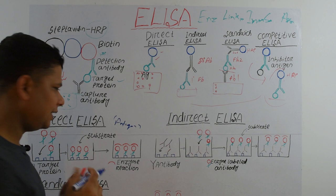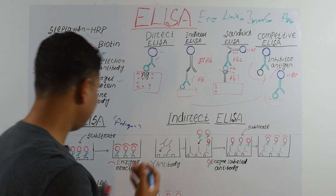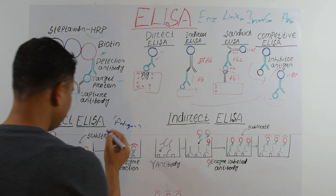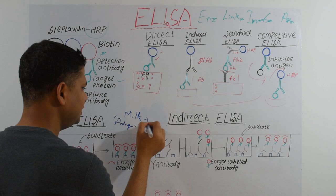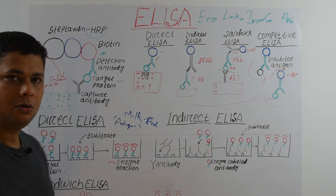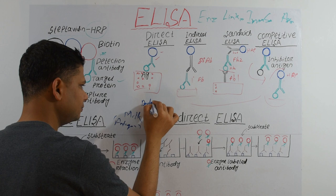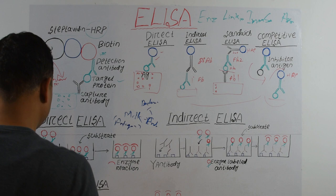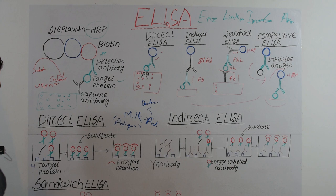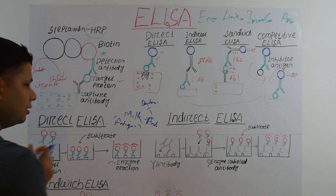For example, suppose we need to detect endotoxin in milk. We collect different milk samples and need to find out which sample contains endotoxin. Endotoxin is a food poisoning agent that comes from bacteria, so we need to detect which milk is contaminated. We take different milk samples, do serial dilution, and fix them to a 96-well plate.